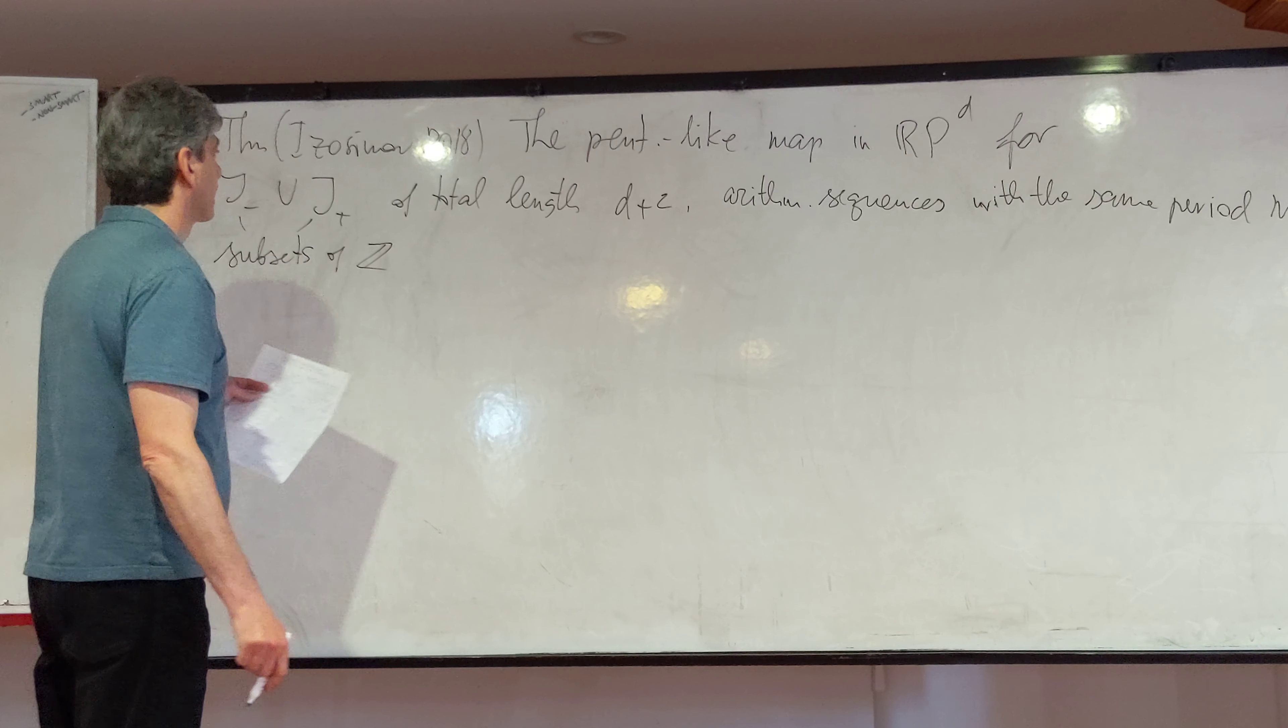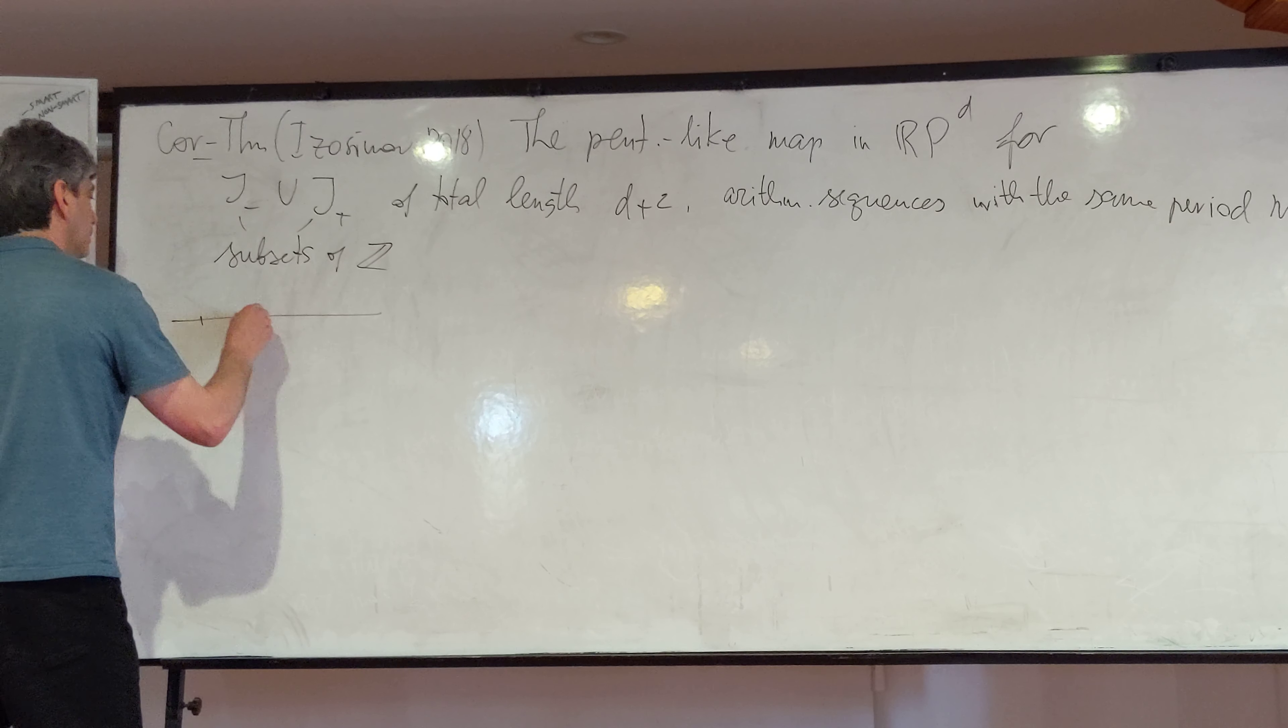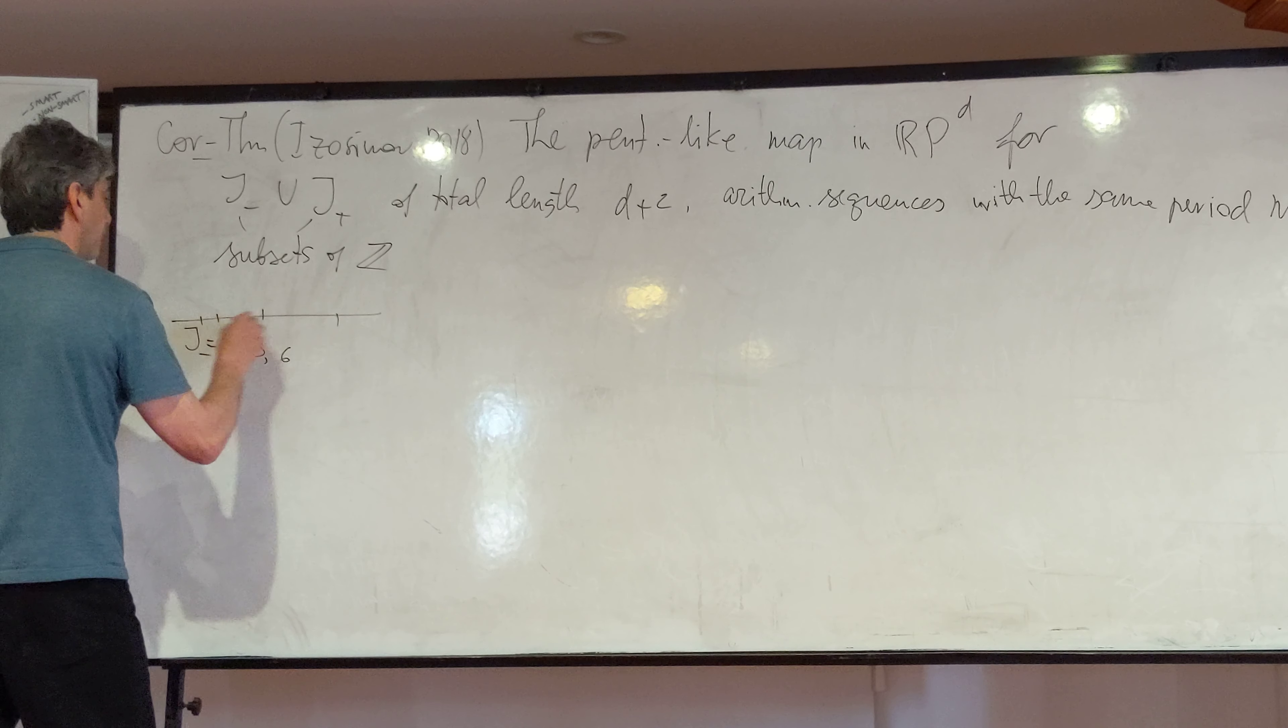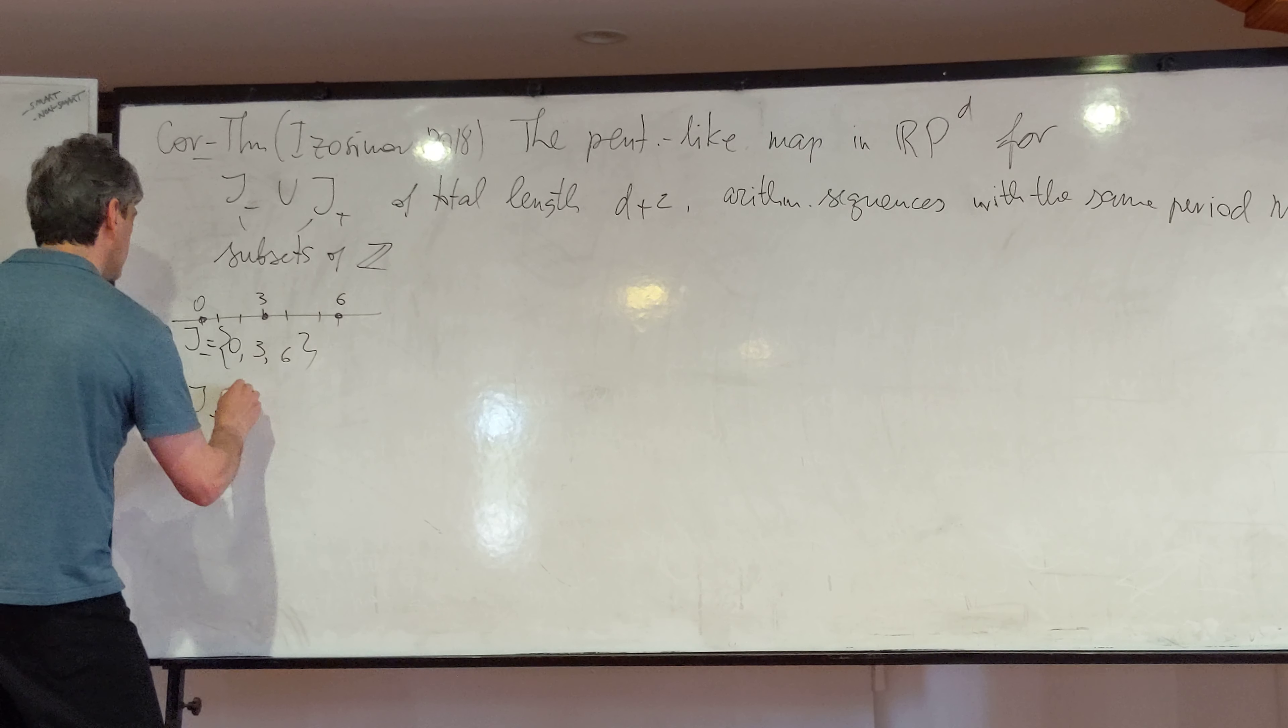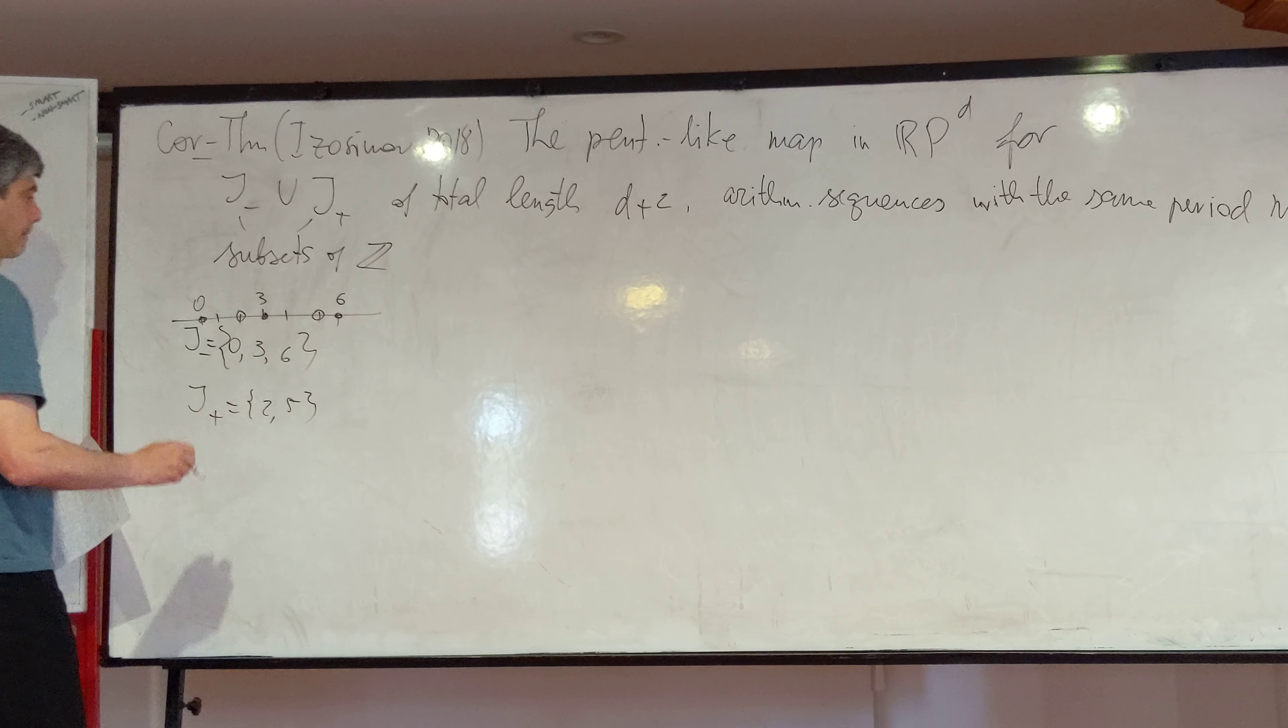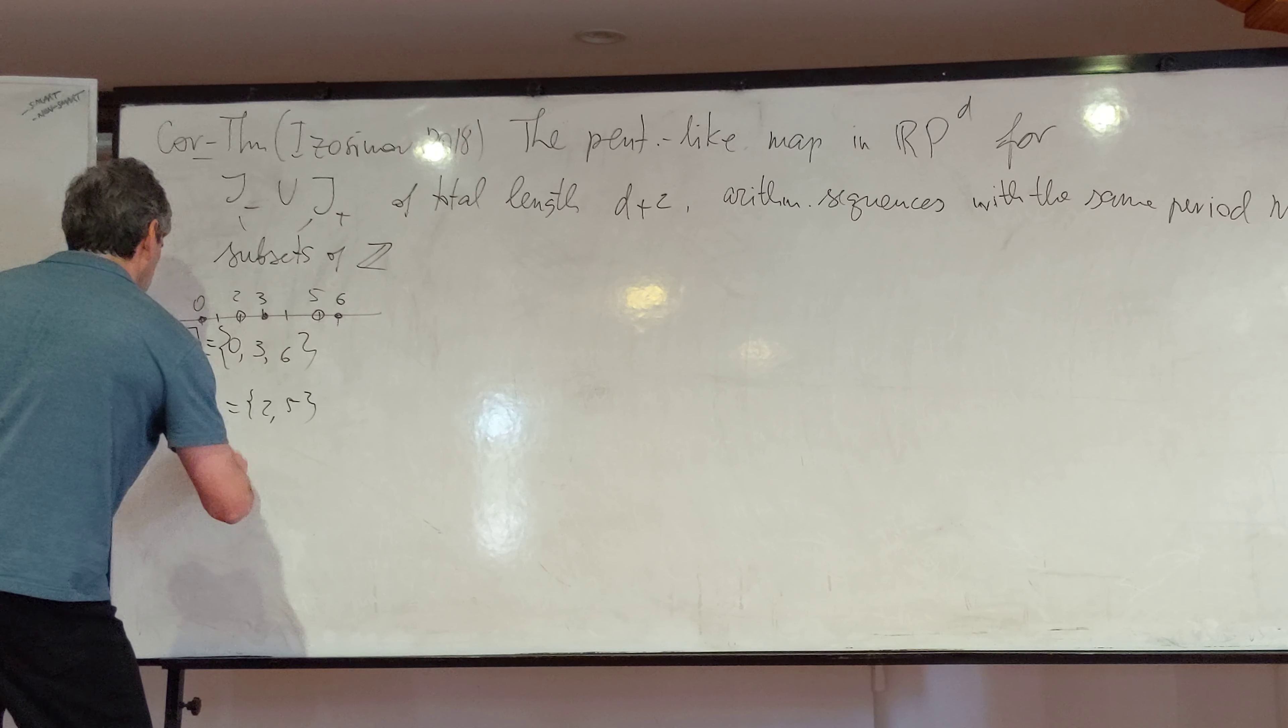And then, so once we have chosen such sets, for instance J-minus will be 0, 3, and 6, and J-plus will be for instance 2 and 5. Then the total length will be 5 and it is in RP3.